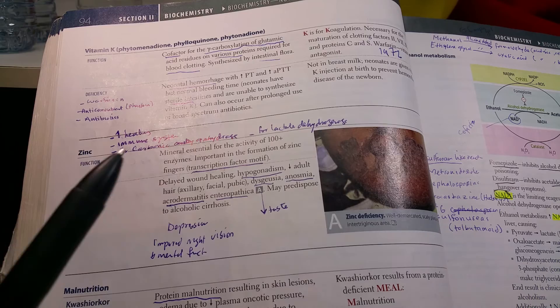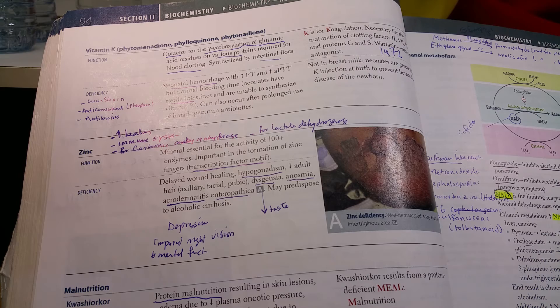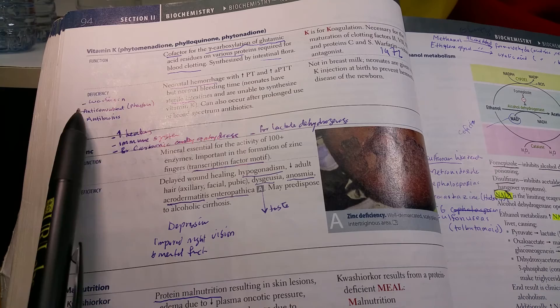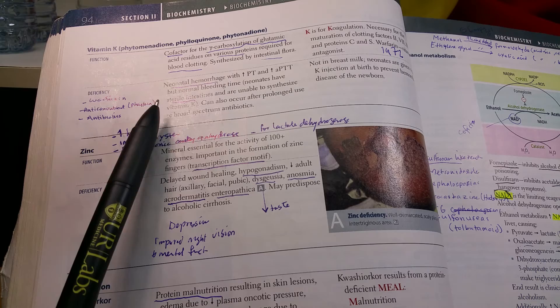Warfarin is the antagonist of vitamin K. Other antagonists are some anticonvulsants like phenytoin and certain antibiotics.